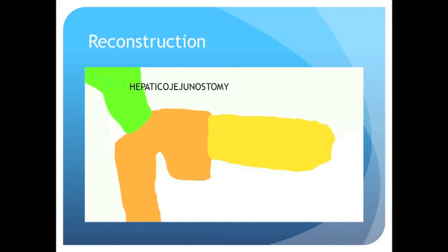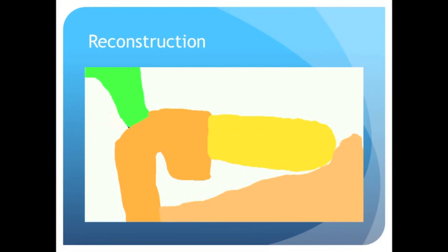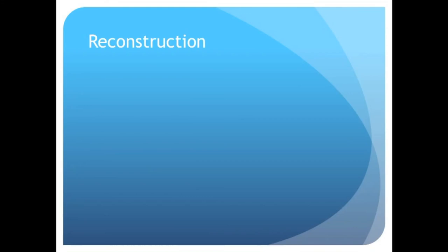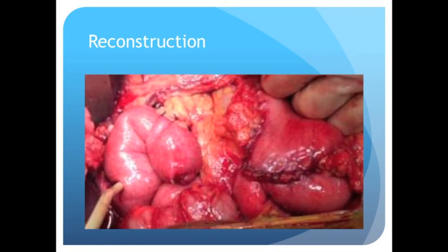Just downstream to the jejunum, a hepaticojejunostomy is performed by suturing the common bile duct or common hepatic duct in green to the jejunum. The last part of the reconstruction is the reattaching of the duodenum to the jejunum in cases of what is termed pyloric preservation. In Whipple's procedures where the antrum is resected, a gastrojejunostomy is performed. This is a live photo demonstrating the pancreaticojejunostomy, the hepaticojejunostomy, and the duodenojejunostomy.